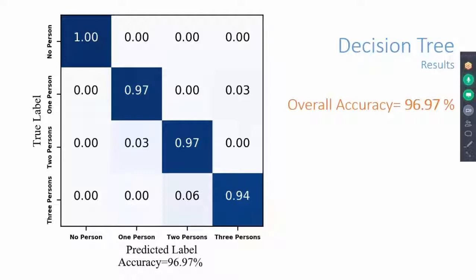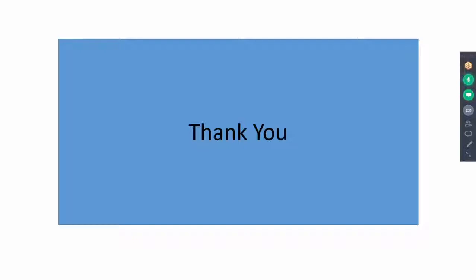To the best of our knowledge, it is the first system that uses CSI from commercially available off-the-shelf devices to realize through-wall movement sensing and counting of moving persons by involving machine learning. That's all. Thank you very much for listening.